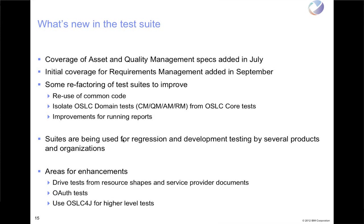Some areas for enhancement we're looking at doing later this year or early next year: right now the tests aren't really driven by information that the service provider exposes. Ideally we would look at a service provider's service document, look at the resource shapes it has, and dynamically decide which tests to run based on that information — or perhaps based on an XML file containing that same information. Having the tests driven by what the service provider advertises as its capabilities, instead of us having to say a given provider doesn't support that so ignore these failed tests, is not optimal. We want to trust the service provider and test based on what it says it can do.